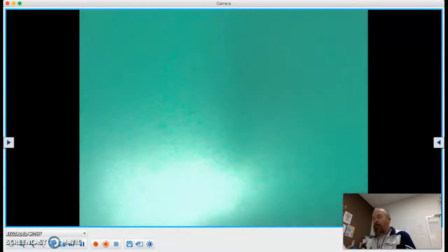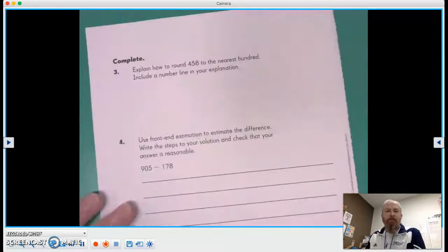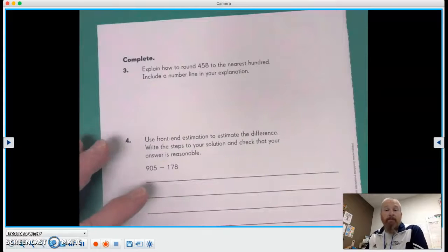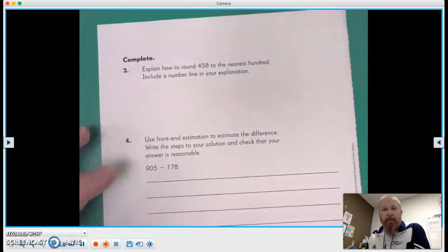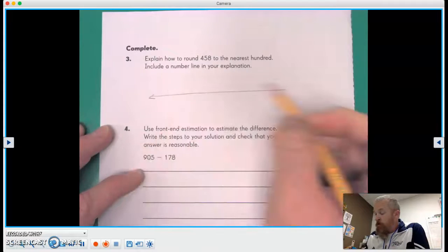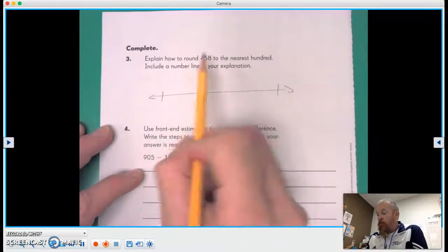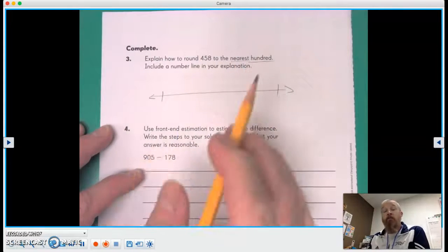All right, let's go ahead and go to page 36. And it says, explain how to round 458 to the nearest 100, including number line in your explanation. So what I'm gonna do is I'll make a little number line here. And I'll put this one and this one. And we're rounding to the nearest 100.